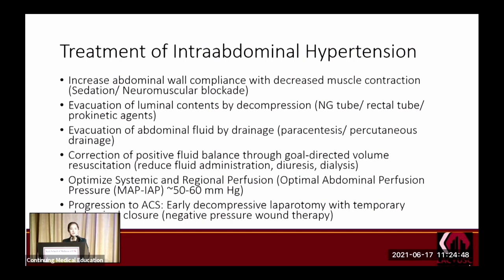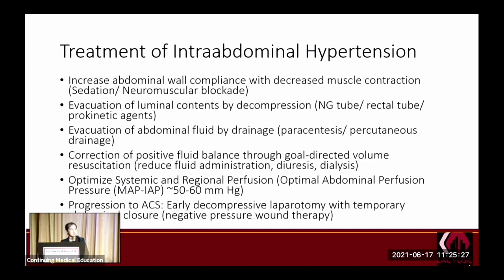When intra-abdominal hypertension is present, the goal is to prevent progression to abdominal compartment syndrome. You can increase abdominal wall compliance by decreasing muscle contraction through increased sedation or neuromuscular blockade. Evacuate luminal contents using a nasogastric tube or rectal tube. If there is a significant fluid collection, such as in pancreatitis, draining it may decrease pressure. Avoid fluid overloading the patient, as edema worsens intra-abdominal hypertension — maintain a net-even fluid balance using diuresis or dialysis if needed.